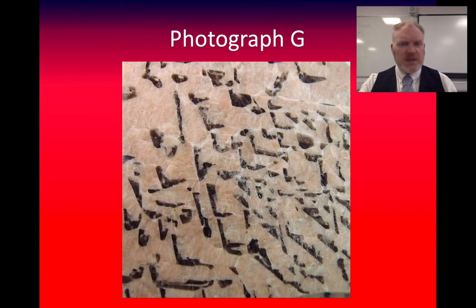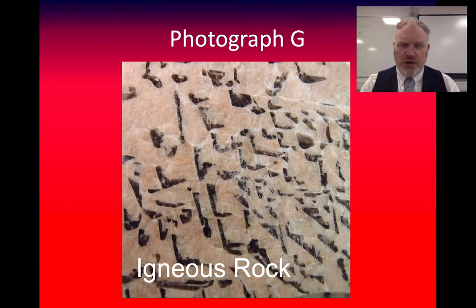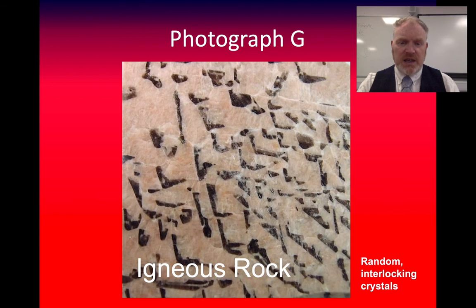Photograph G is a slightly tricky one. This again shows a polished surface of a rock, and this is an example of an igneous rock. It's slightly mean because this is a type of texture of an igneous rock that we don't often look at — it's called a graphic texture — but again we have random interlocking crystals. This particular igneous rock is another type of granite.